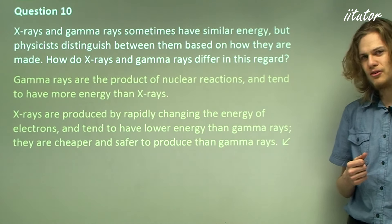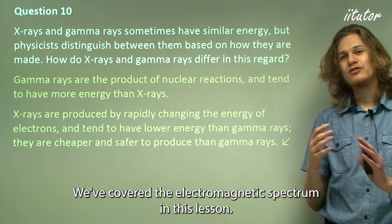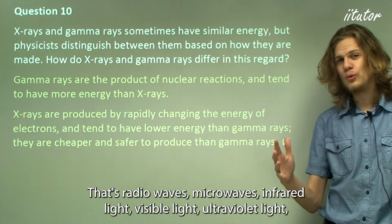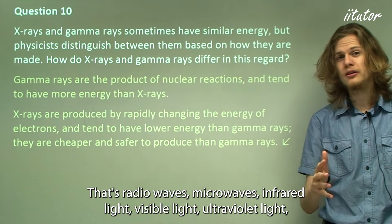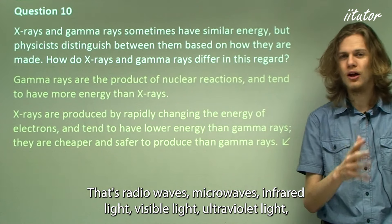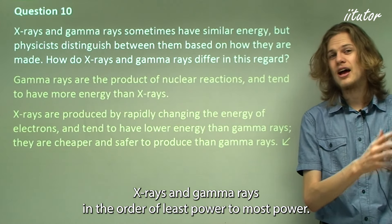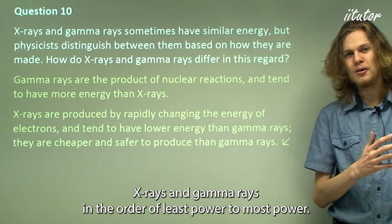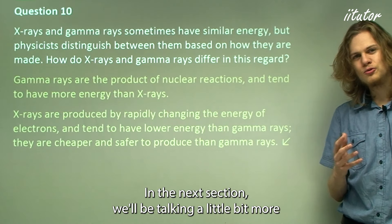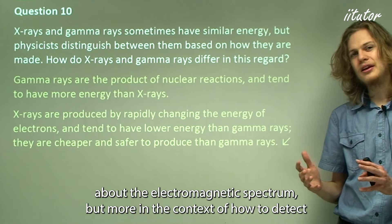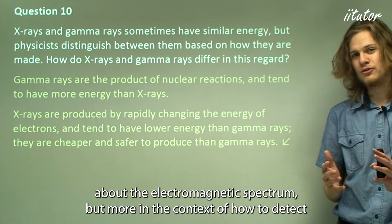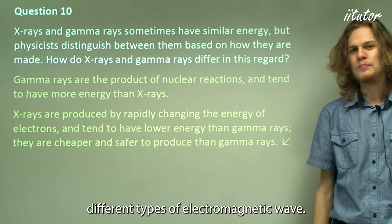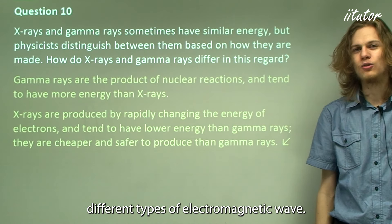That's the end of the questions. We've covered the electromagnetic spectrum in this lesson: radio waves, microwaves, infrared light, visible light, ultraviolet light, x-rays, and gamma rays — in order of least to most power. In the next section, we'll be talking more about the electromagnetic spectrum in the context of how to detect different types of electromagnetic waves.